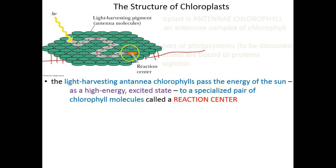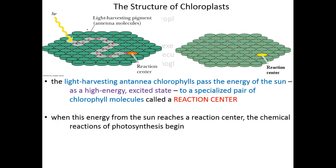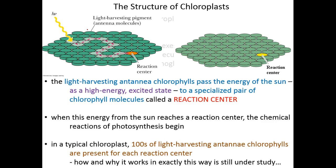Reaction centers are specialized chlorophyll molecules spread diffusely and sparingly across the thylakoid membrane. In a typical chloroplast, there are hundreds of light-harvesting antenna chlorophyll molecules for every single reaction center. Light hits an antenna chlorophyll molecule, those excited electrons are quickly passed from chlorophyll to chlorophyll, and randomly find their way to a reaction center — where unique chemical reactions of the light reactions of photosynthesis can occur. How and why photosynthesis works this way is not completely understood, but we know this is how it works.